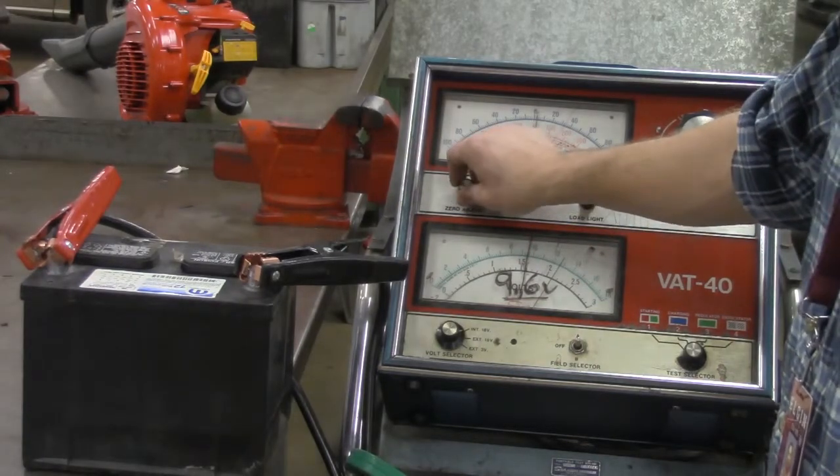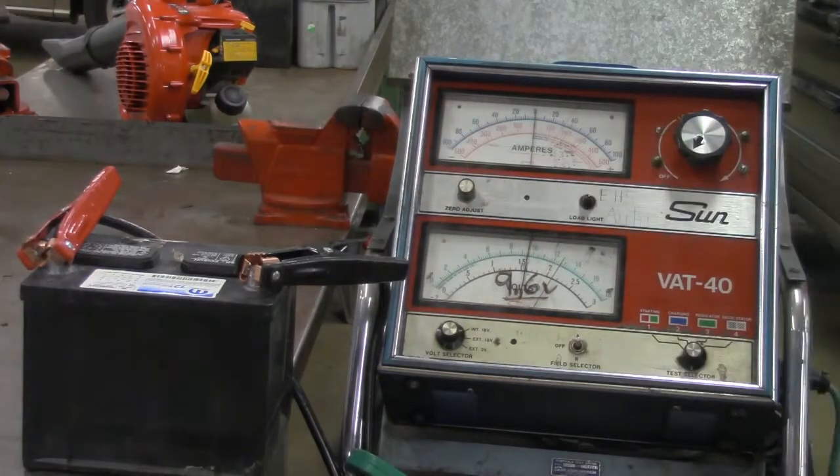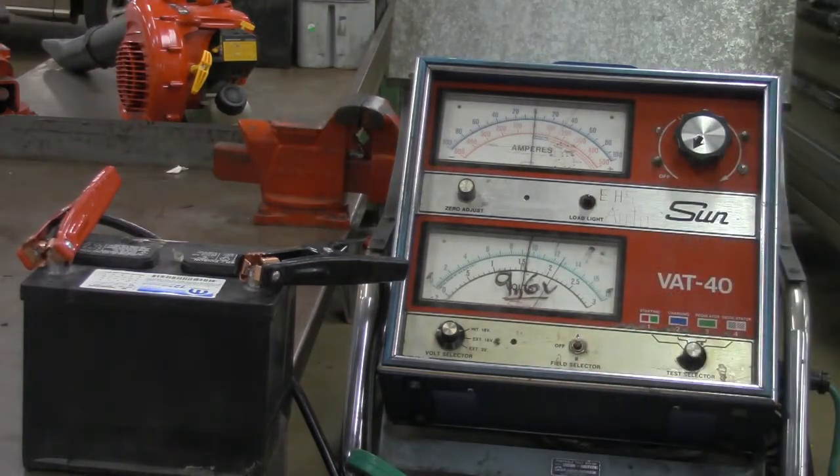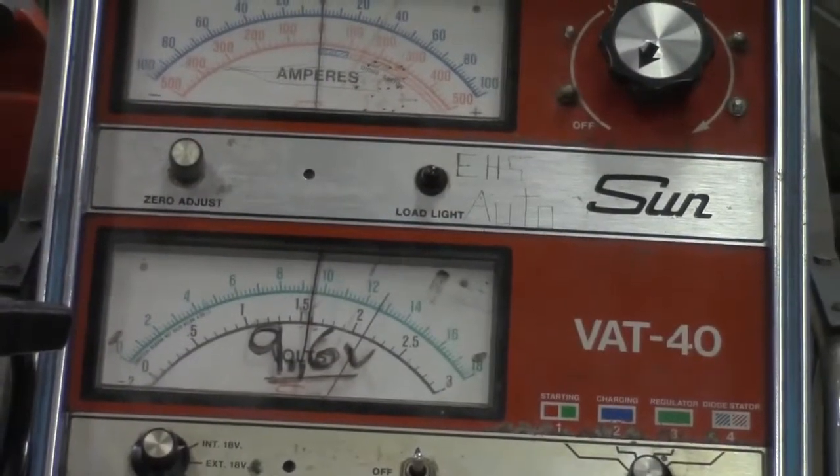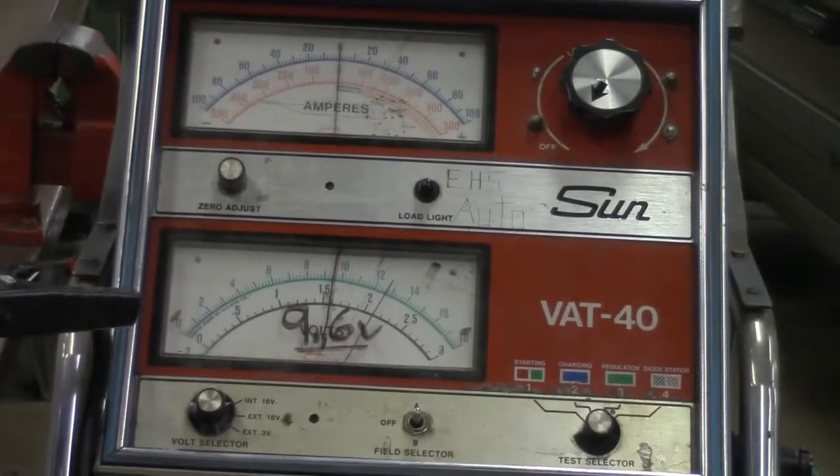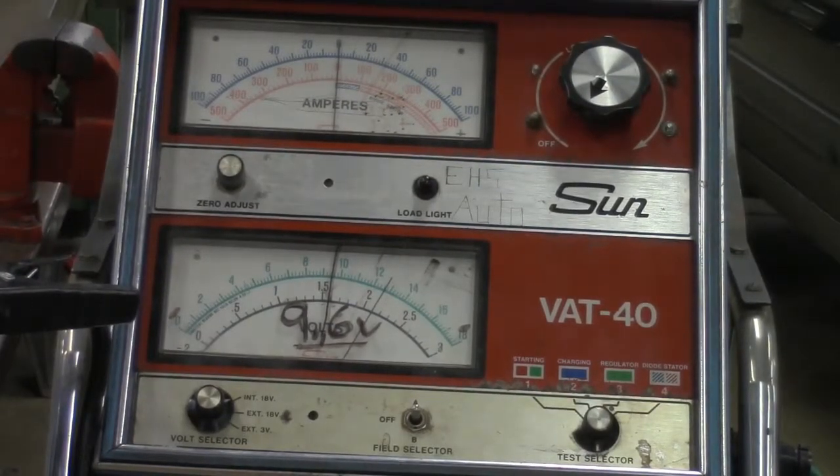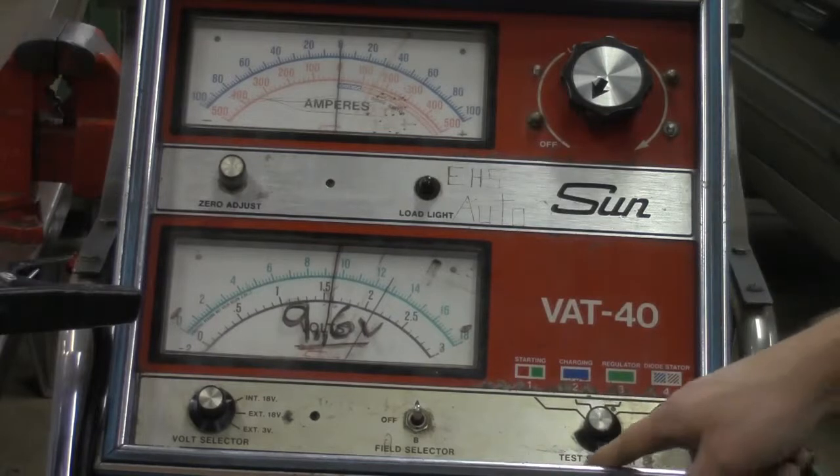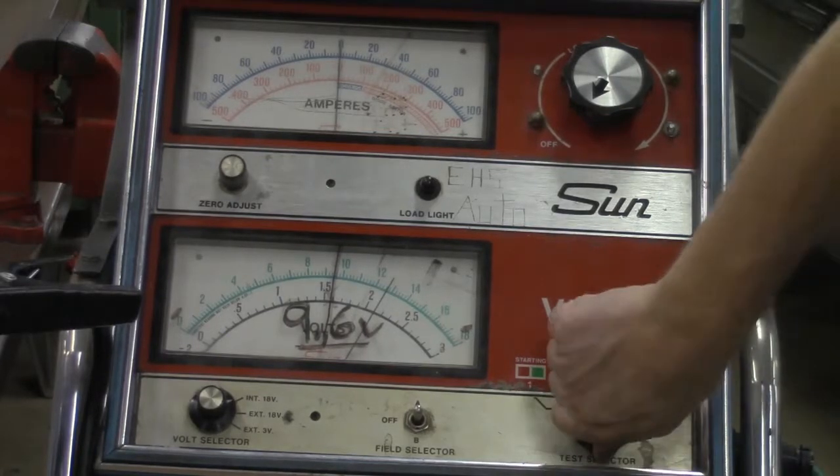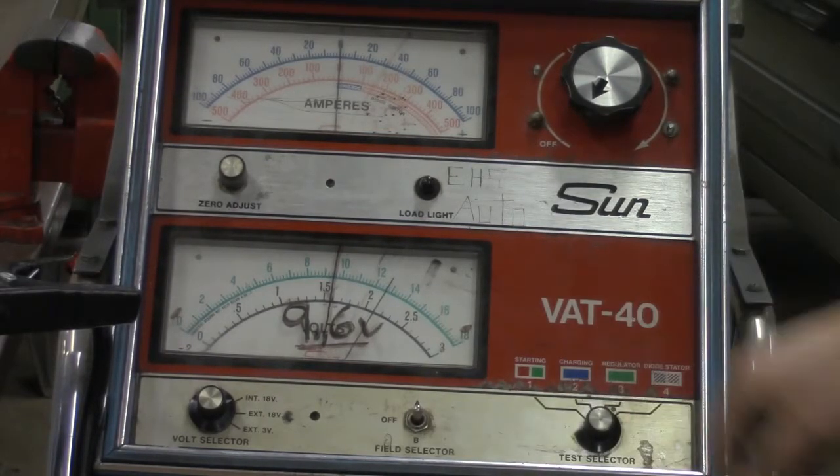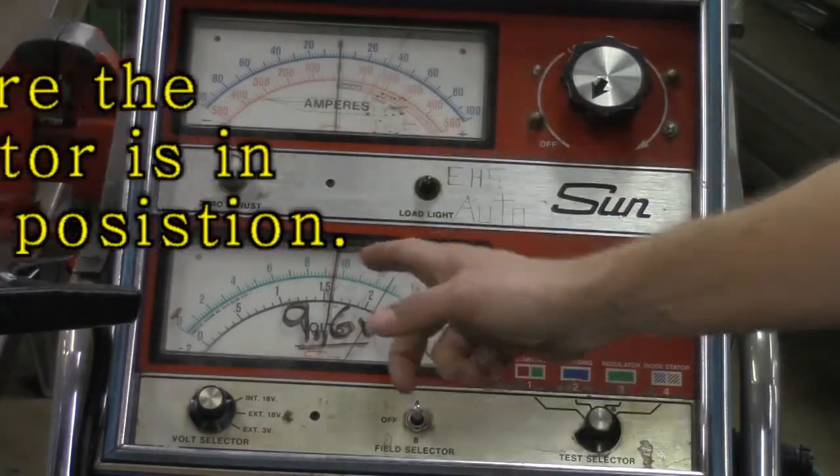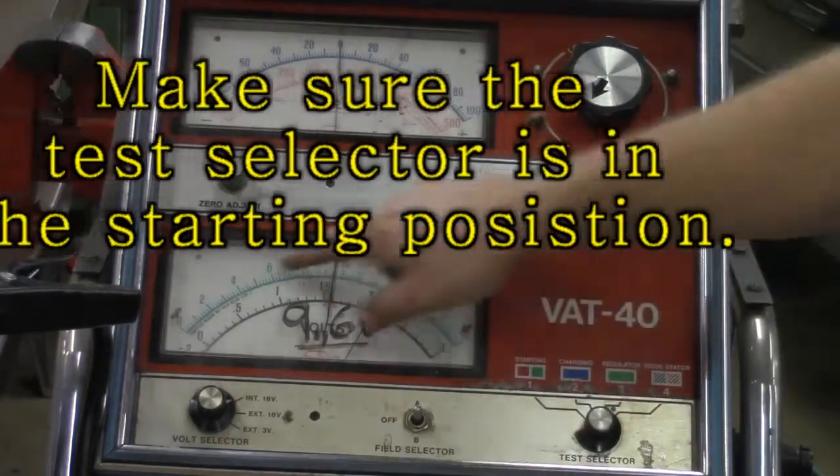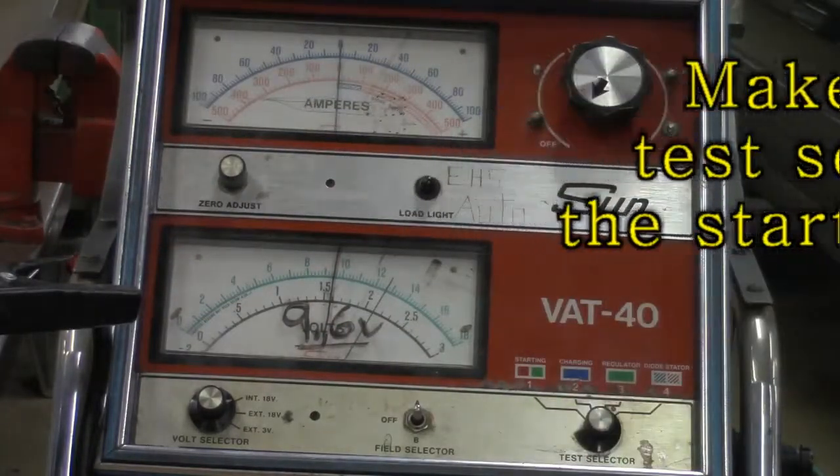We're going to double check to make sure our zero is totally adjusted. At this point, I'm going to kind of try to zoom in a little bit right on the VAT40 machine. One second. Right about there. Again, we're going to take a look. My test selector is in the starting position. So turn it far left. I know the arrow is broken on there, but just turn it all the way to the left and you'll be good. We're going to read the red scale up top, we're going to read the green scale up top on my voltmeter.